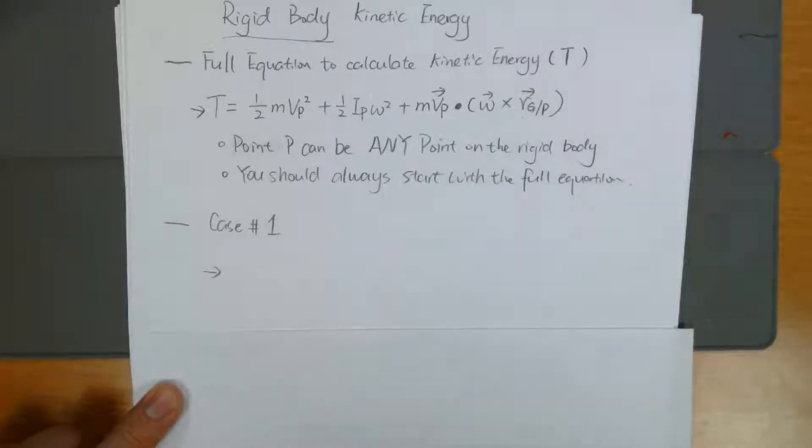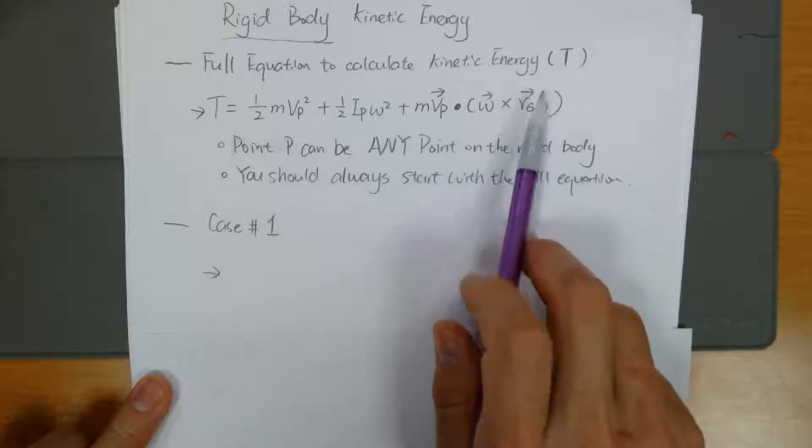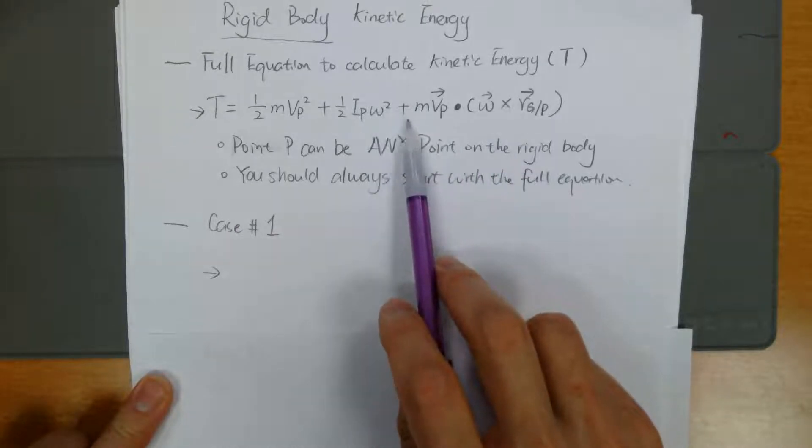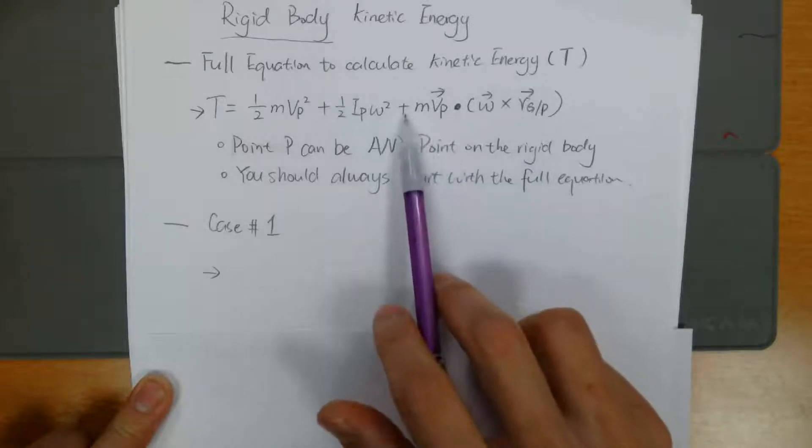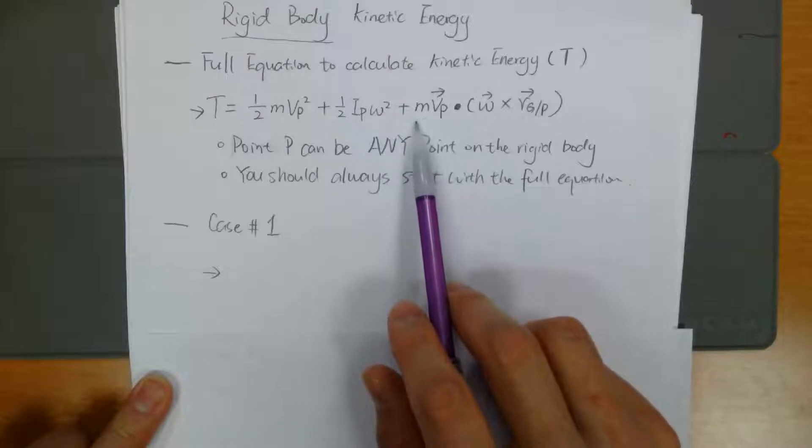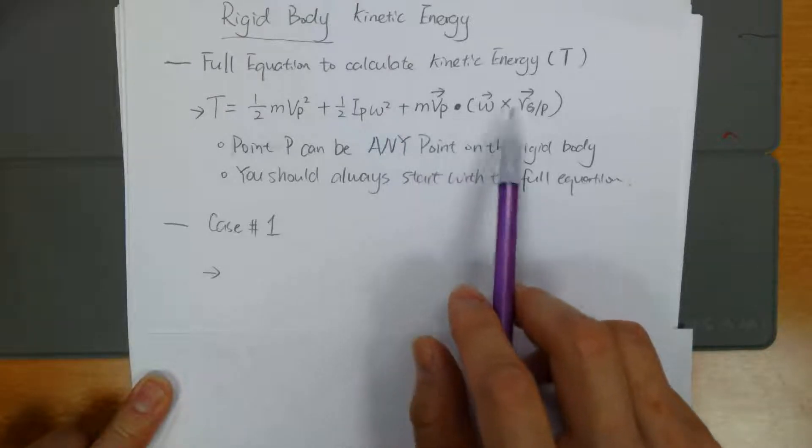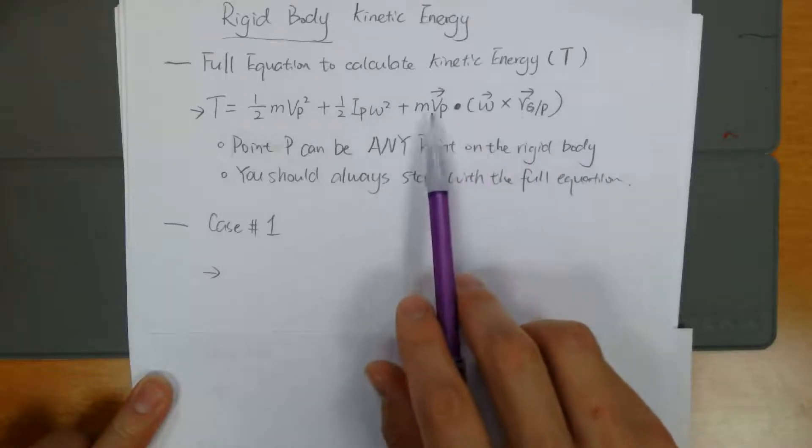So we're going to talk about two different cases. Case number one, how to simplify this equation. What do I mean simplify? We want to pick a particular point so we can make this equation look shorter. In other words, we want to get rid of this dot and cross product term. If we can get rid of this third term.